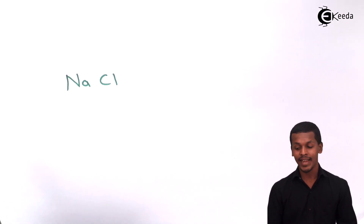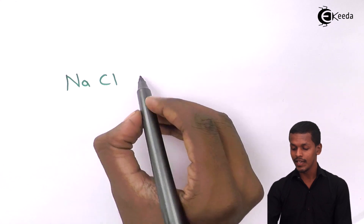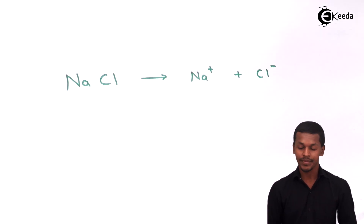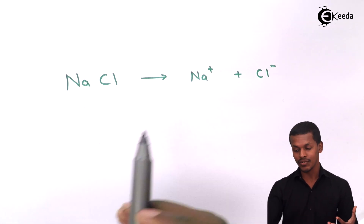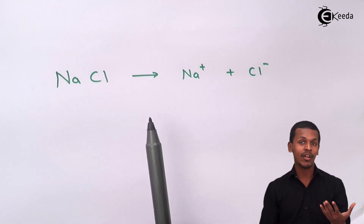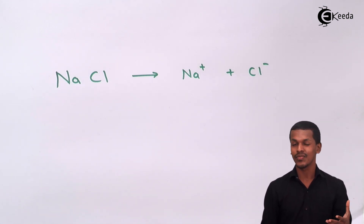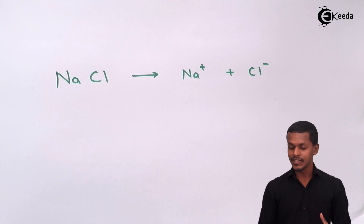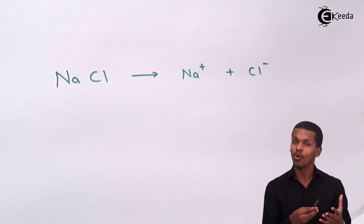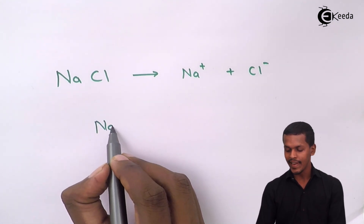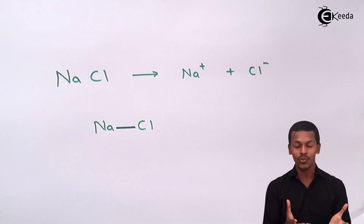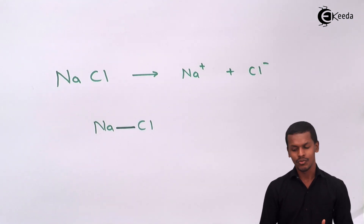There is always a force of attraction between the sodium ion and the chloride ion. Na+ has a positive charge while Cl- has a negative charge. Sodium has one electron less, while the chloride ion has one electron in excess. Because of this, sharing of electrons takes place, creating a force of attraction — and that is the bond in NaCl, representing the force of attraction between these two ions, forming a molecule.